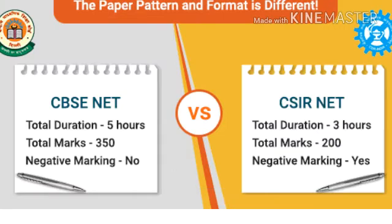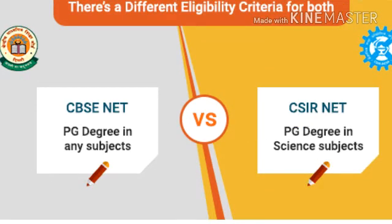Total marks in UGC NET is 350 but in CSIR NET it is 200. Time duration in UGC NET is 5 hours but in CSIR NET it is 3 hours. UGC-CBSC conducts these exams for Arts, Humanities, Social Science, Computer Science, and other Arts subjects.